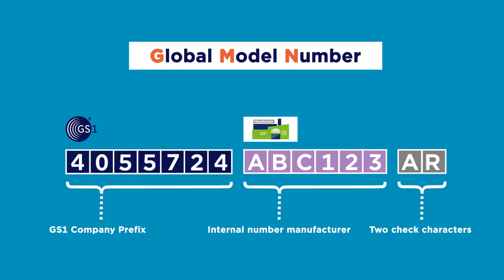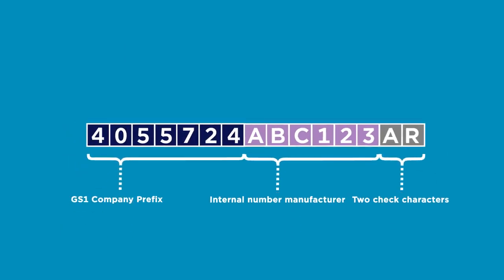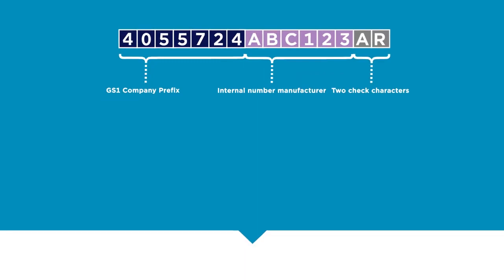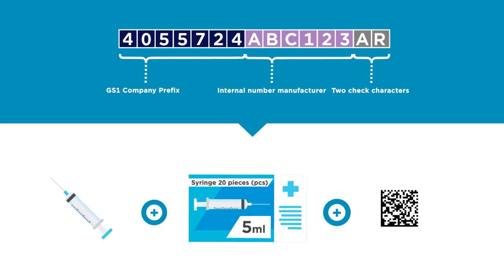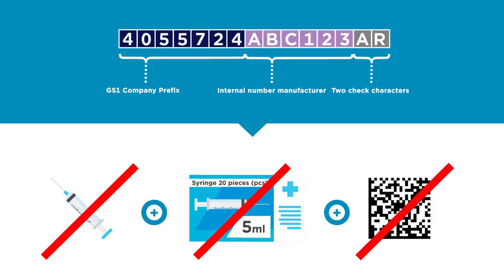And the global model number — that is the basic UDI-DI — which can be up to 25 characters long, is ready. Important note: the basic UDI-DI does not appear in text form or in a barcode on the products or product packaging. This means that it has never been encoded in a barcode, but is used in the EUDAMED database and in relevant documents.